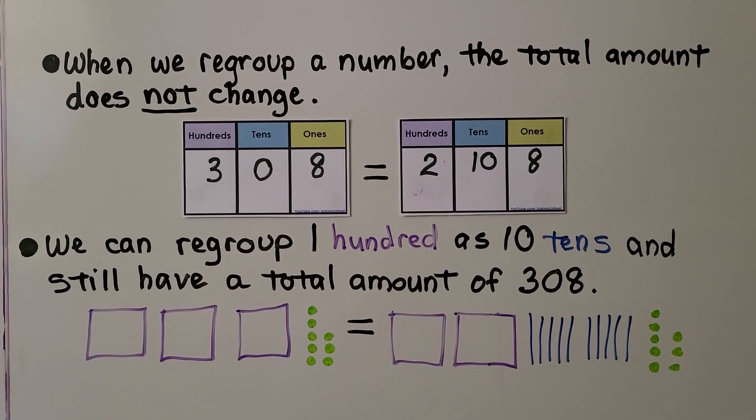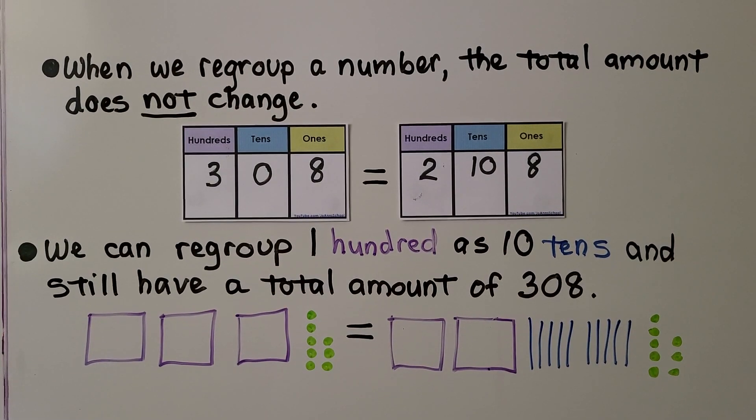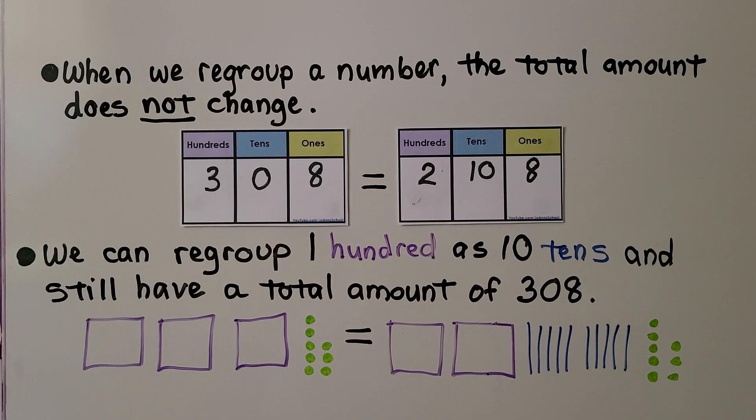When we regroup a number, the total amount does not change. We have three hundred eight. It's three hundreds, zero tens, eight ones, and it's equal to two hundreds, ten tens, eight ones. We can regroup one hundred as ten tens, and still have the total amount of three hundred eight. We took one of the hundreds and turned it into ten tens. Both quick pictures show three hundred eight.